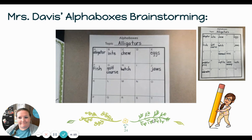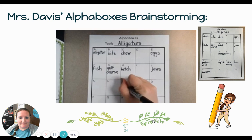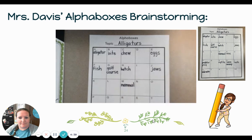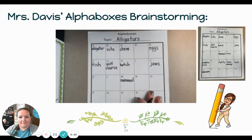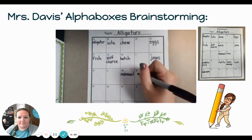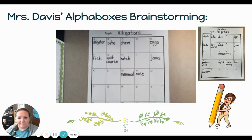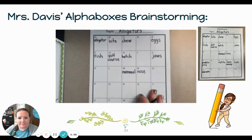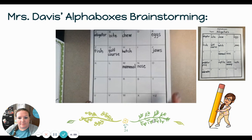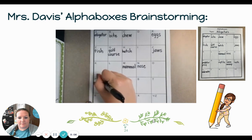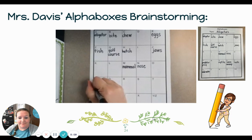L — no L. M — alligators like to eat other animals, so I'm going to put mammal, because that might come up in the alligator's diet. N — I know alligators have a nose. O — nothing for O yet. P — we're going to say predator, because I know that they eat other animals. I'm also going to add the word prey.